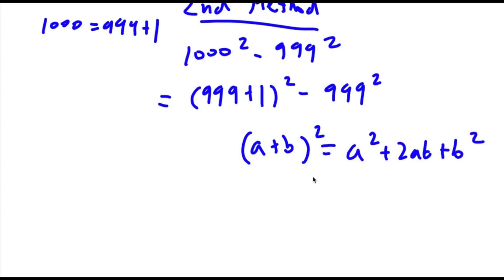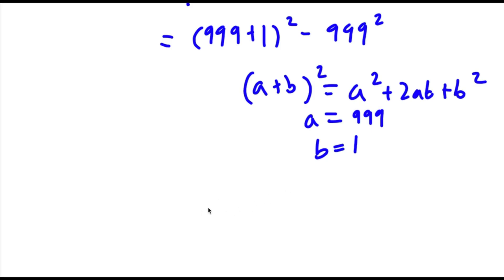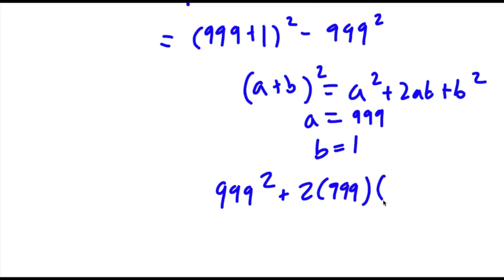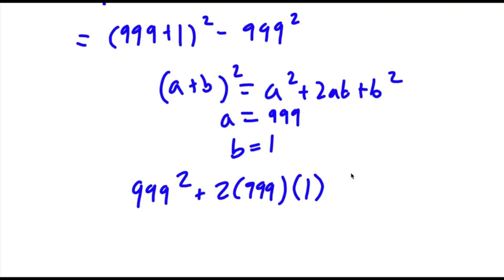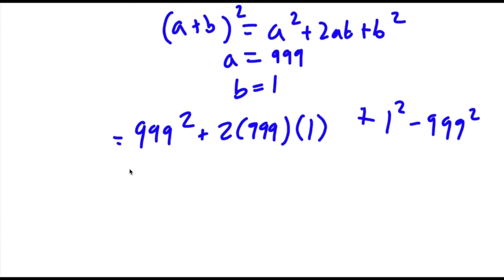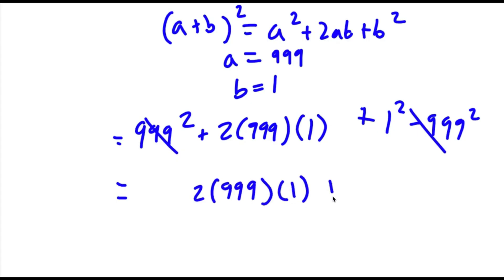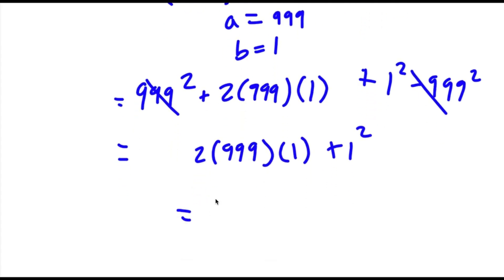So in this case a is equal to 999 and b is equal to 1. So this would be 999 squared plus 2 times 999 times 1 plus 1 squared, and then I have my minus 999 squared at the end. Now the two 999 squared terms cancel out, so I'll be left with 2 times 999 times 1 plus 1 squared. Now 2 times 999 is 1998, so I have 1998 plus 1, and this is equal to 1999.